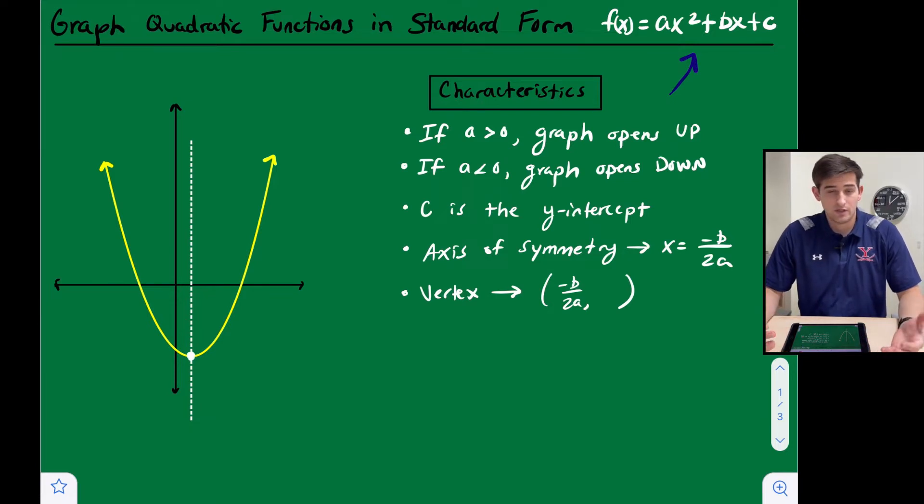So whenever we see our equation, we can go ahead and plot 0 comma c on our graph. And once again, the axis of symmetry is x equals opposite of b over 2a. We learned how to find the axis of symmetry and the vertex in a previous video, and I will link that in the description below.